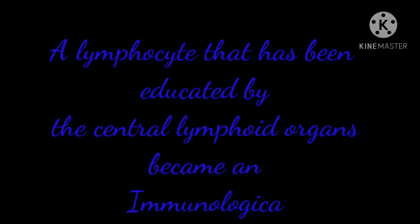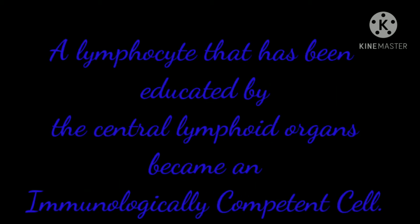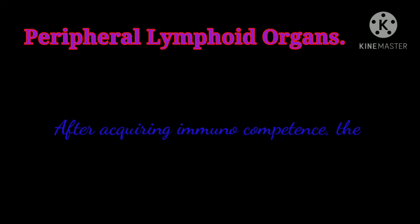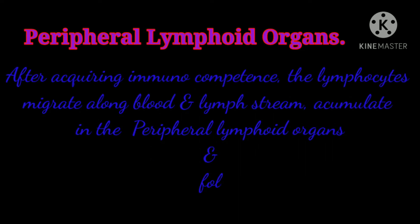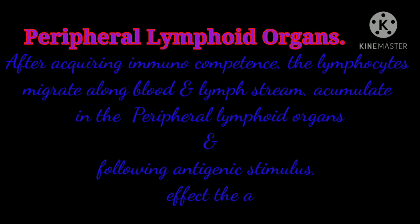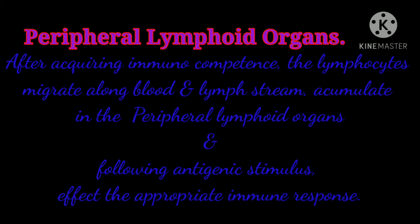A lymphocyte that has been educated by the central lymphoid organs acquires immunocompetence. After acquiring immunocompetence, the lymphocytes migrate along blood and lymph streams, accumulate in the peripheral lymphoid organs and, following antigenic stimulus, affect the appropriate immune response.